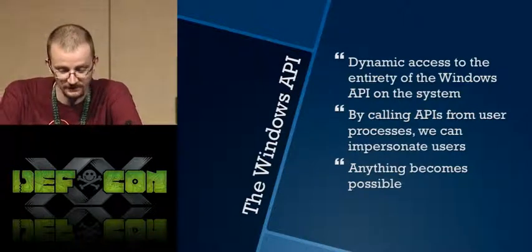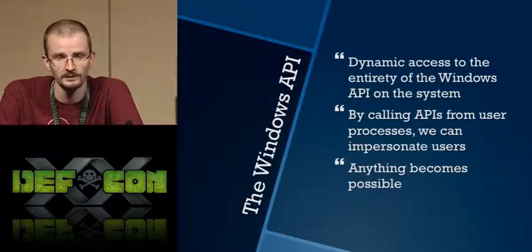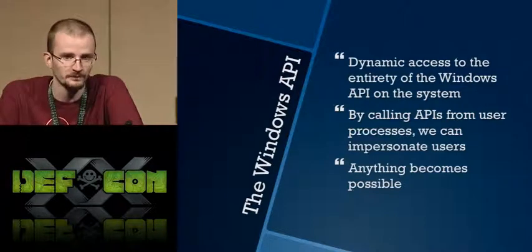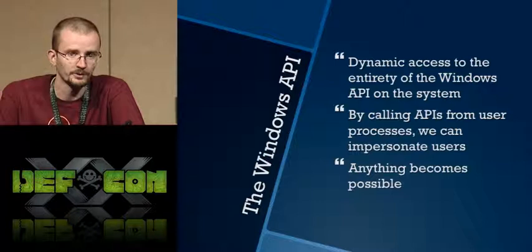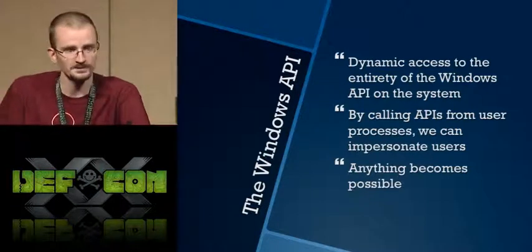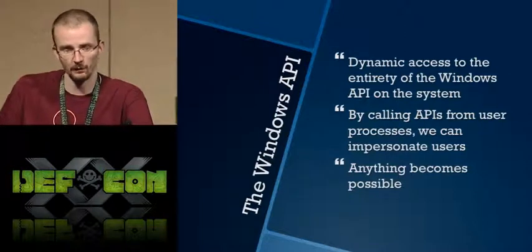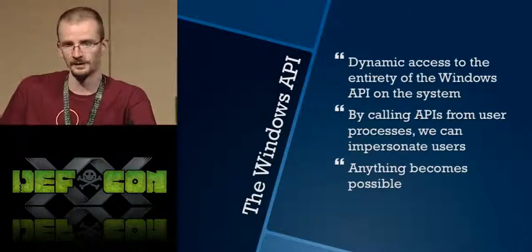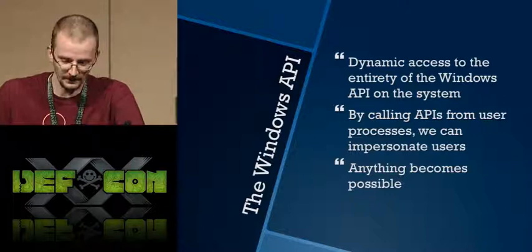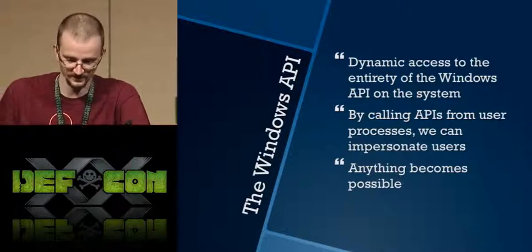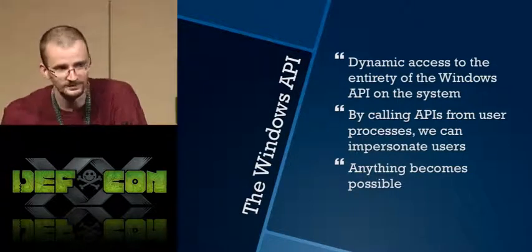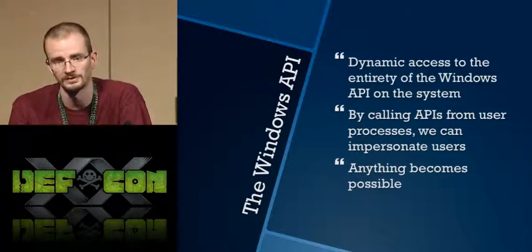By calling these APIs from a user-land process, we can actually impersonate any user on that system. This can be very important for things like cryptographic context, where the context changes from user to user. So if we migrate from a system process into a user process, we can call Windows cryptographic APIs as if we were that user, and the operating system will go ahead and decrypt that data for us. Basically, Railgun and access to the Windows API makes anything possible once you get that initial shell.